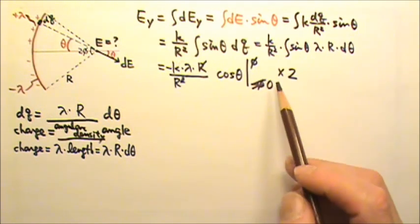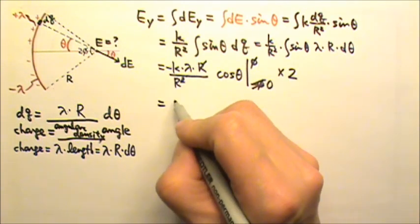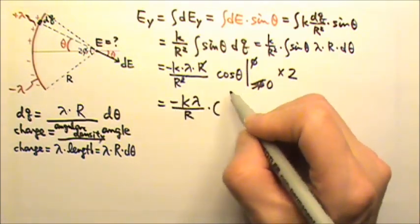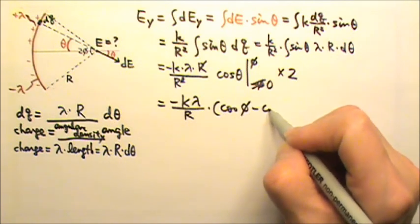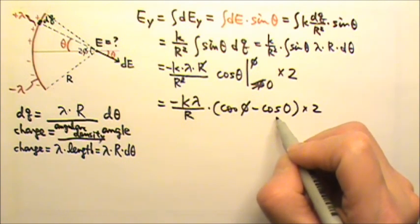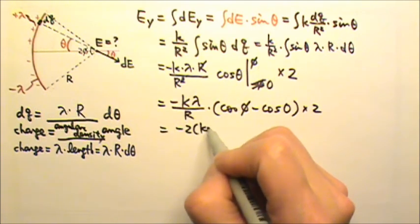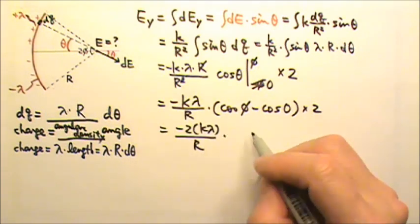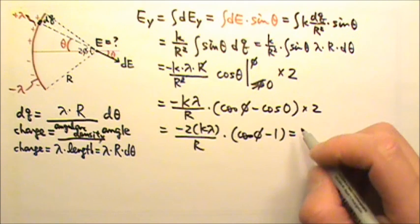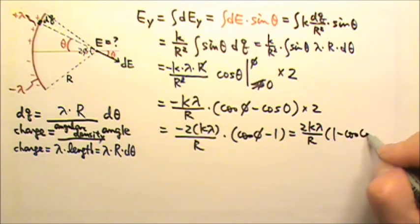So we would have negative k λ over r times cos φ minus cos 0 and then times 2. And the cos 0 is 1. So this will be negative 2kλ over r and then times cos φ minus 1. Or you can get rid of the negative and flip these two. So that will be 2kλ over r times 1 minus cos φ.